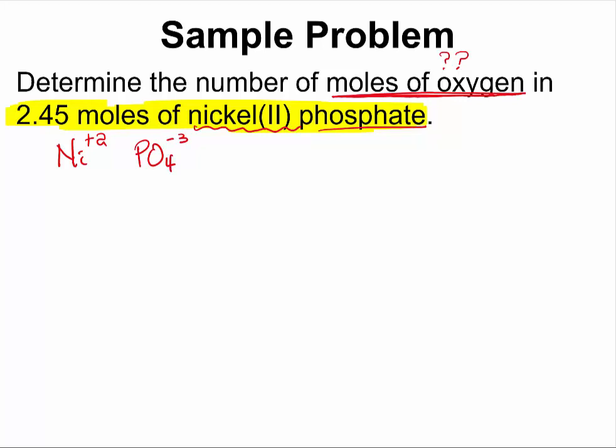To balance out the charges on both of them, we will need 3 nickel ions and we will need 2 phosphates. So this is the formula of nickel(II) phosphate.